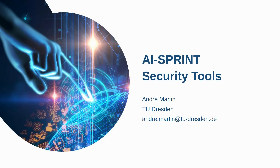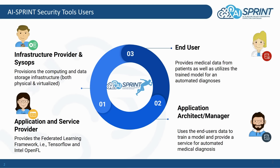I want to quickly review the personas that we have in AI Sprint. First, there is the infrastructure provider. He is usually provisioning the computing and data storage infrastructure that exists either as physical or as virtualized components such as virtual machines.